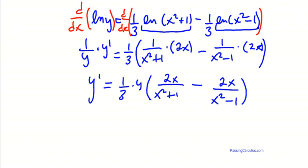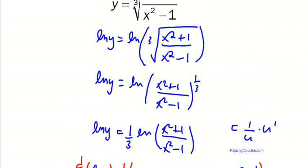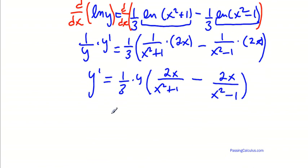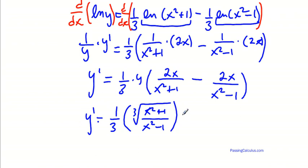So really, there's not much left to do other than that y. I know what y is. Y is this guy right here. So I can plug that back in all the way down here for y. So it's going to look a little bit messy, but it is what it is. Y prime is equal to one over three cube root of x squared plus one all over x squared minus one, and then this nasty little guy in here, 2x all over x squared plus one minus 2x over x squared minus one.